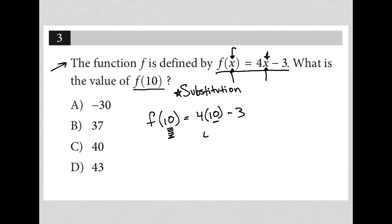So f of 10 is equal to 4 times 10 minus 3. 4 times 10 is 40, and 40 minus 3 is equal to 37.